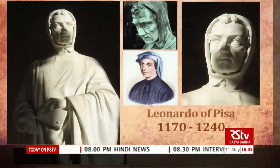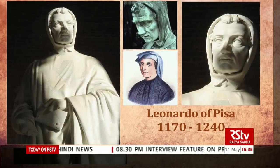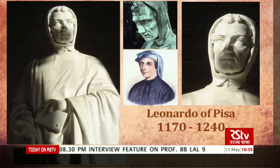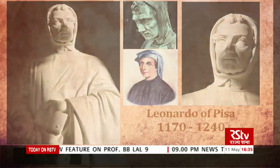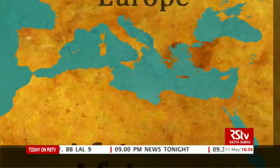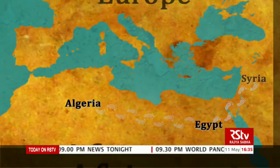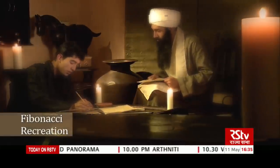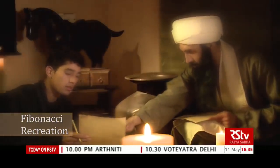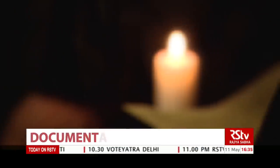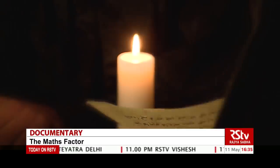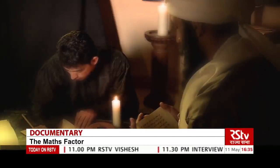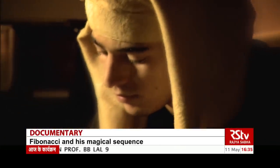Fibonacci's actual name was Leonardo of Pisa. He was Italian and lived in the 12th century. Through his youth, he travelled through Algeria, Egypt, Syria, Greece, Sicily, and Provence. During this time, he had the opportunity to study under several mathematicians and was exposed to the Hindu-Arabic numeral system. He returned to Pisa in 1200, where he wrote his famous book Liber Abaci, which means the Book of Calculations.